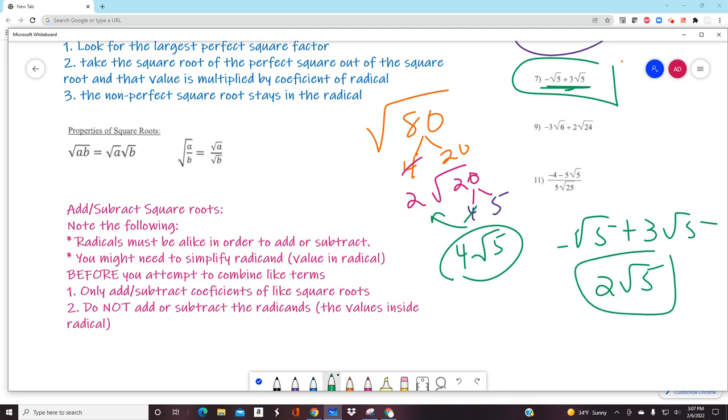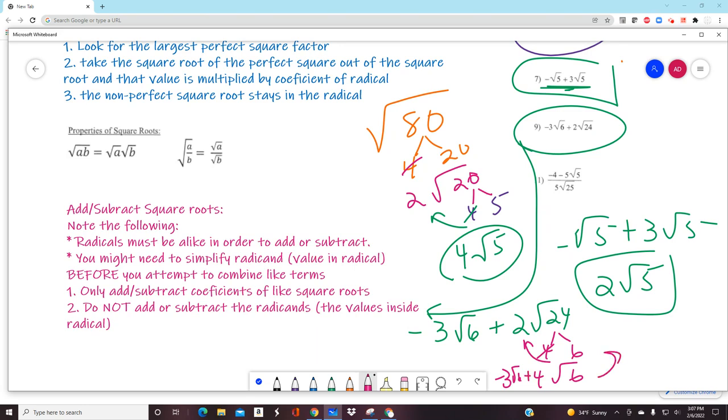This guy right here, you might be saying wait, they're not the same, so I guess I can't do it. But actually you can, because if they're not the same, we can make them the same sometimes. Square root of 4 times square root of 6 - square root of 4 is 2, bumps out, makes 4. Over here I have negative 3 square root of 6, and lo and behold that makes 1 square root of 6, which we usually just write as square root of 6.